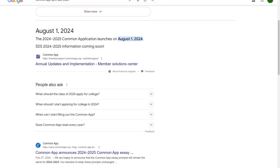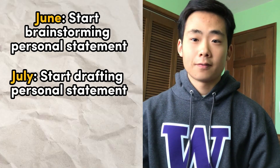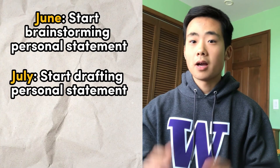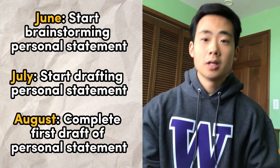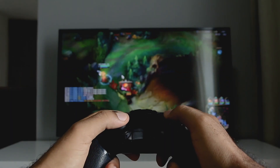When you apply to colleges, you're going to use a website called Common App, and it opens every August 1st. But I recommend you start brainstorming your essays before that date because it's going to give you a headstart. Start brainstorming your essay in June, and by the start of July you should begin writing your first draft of your personal statement, which is the big 650-word essay. Then by August, which is when school starts, you should have a complete first draft. This is going to put you way ahead of other seniors.